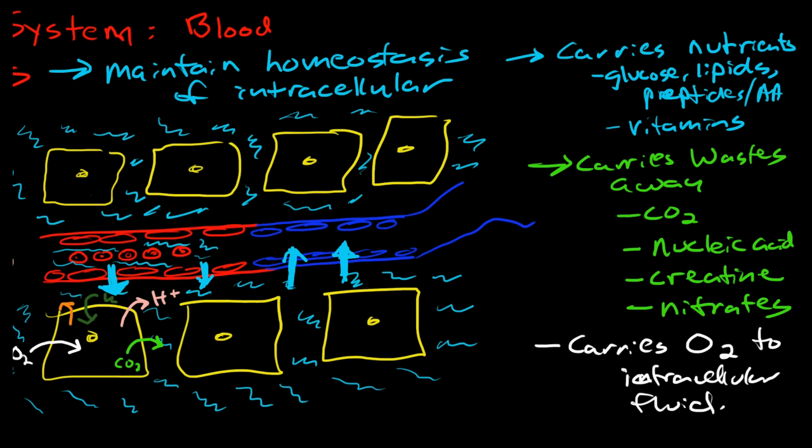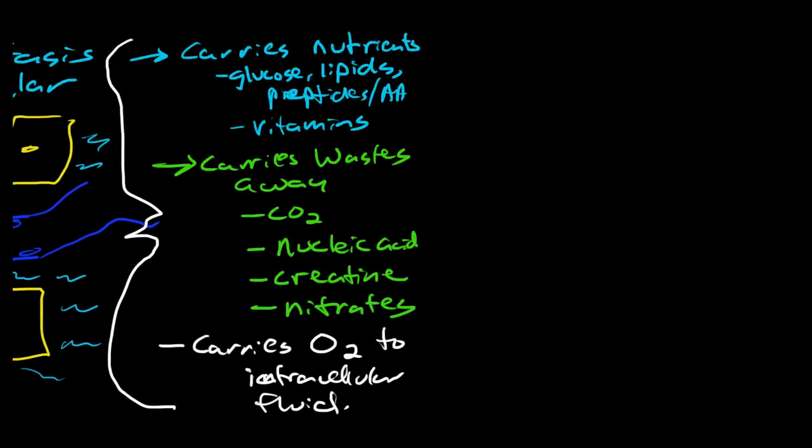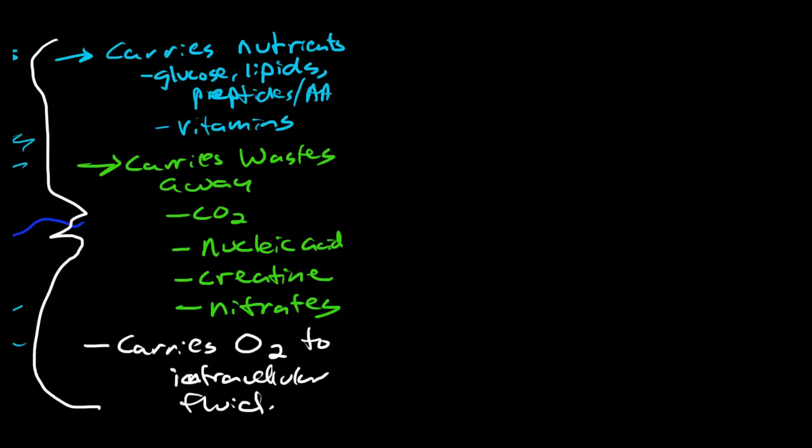Beyond these direct contributions to maintaining the internal environment, other functions include providing intracellular communication because the blood is constantly moving and mixing. It provides a medium for intracellular communication—endocrine from organ to organ, or paracrine from cell to cell, including cytokines.